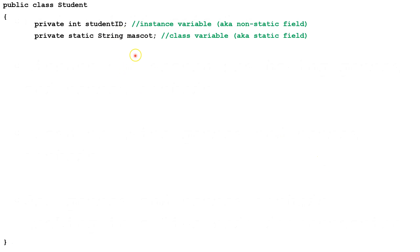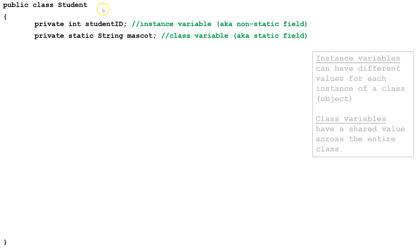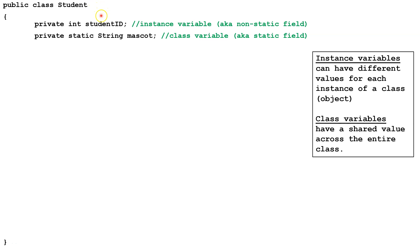Here we have a class Student with two fields. The first one, studentID, is an instance variable, also known as a non-static field. We know it's non-static because it doesn't have the word static here. Instance variables can have a different value for each instance of Student, and that's what we want, because a student ID should have a different value for each student.